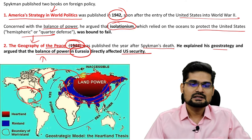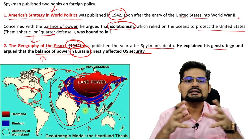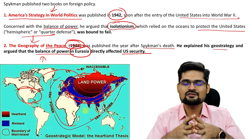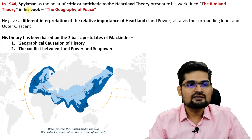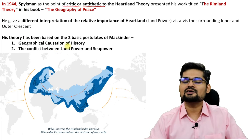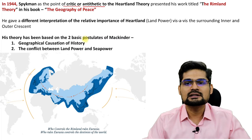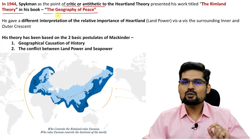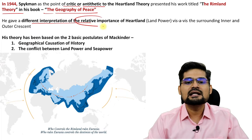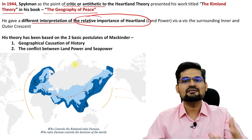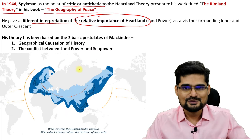This rimland theory was part of the 'Geography of Peace' book. The geostrategic model considers together land power and ocean power. In 1944, Speakman, as a critique or antithesis to the heartland theory, presented his rimland theory. He gave a different interpretation of the relative importance of the heartland — that is, land power. He argued that relatively, heartland was not important; rather, rimland was important.